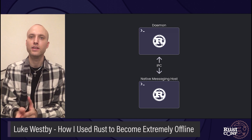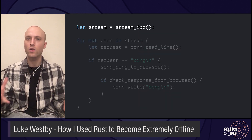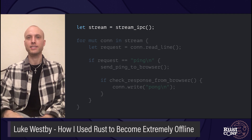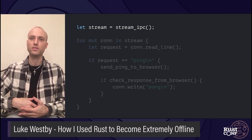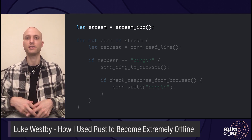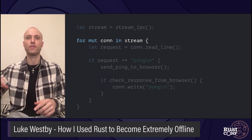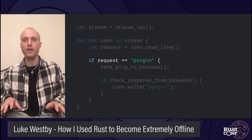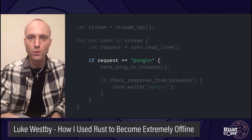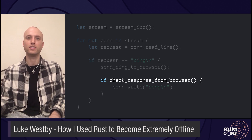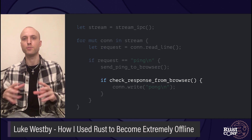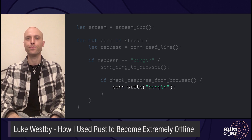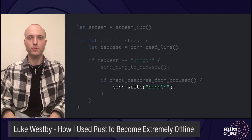Now let's look at the native messaging host side. There's not a whole lot going on here — it's just a proxy between the daemon and the browser itself. We accept incoming IPC connections. The native messaging host runs continuously, whereas the daemon runs once and exits, so we're accepting one connection after the next over time. For each connection that comes in, we await a request, and if the request is ping, we proxy that up to the browser. When we receive a response from the browser, we check if it says pong, and if this function returns true, we send pong back to the daemon so that it can finish up. It's just a proxy.